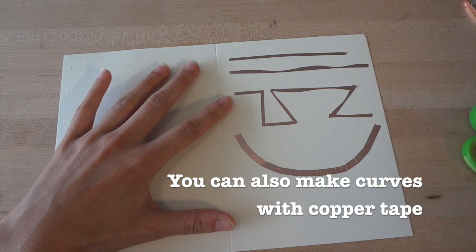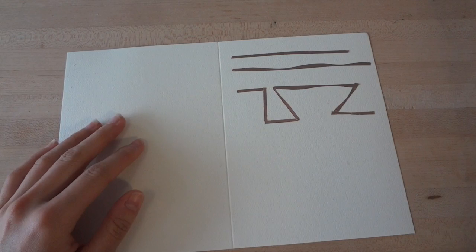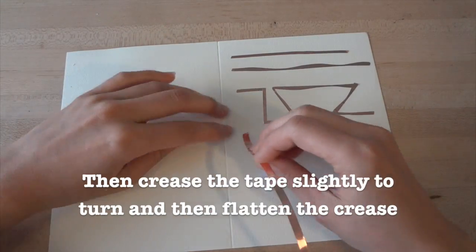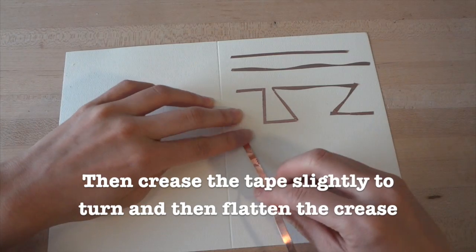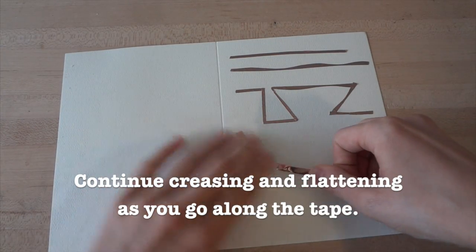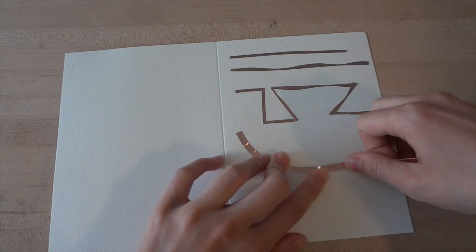In addition to sharp corners, you can also make smooth curves with your copper tape. The trick is to first stick the copper tape down so you have an anchor, and then crease the tape slightly so that it turns a little bit, and then flatten. Continue creasing slightly and then flattening as you go along the tape. Pretty soon you'll have a curve.